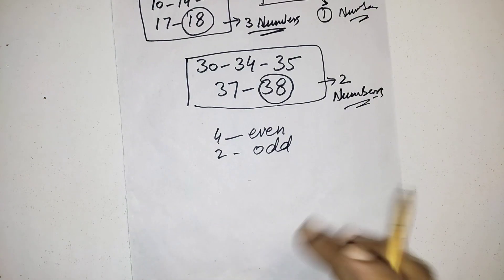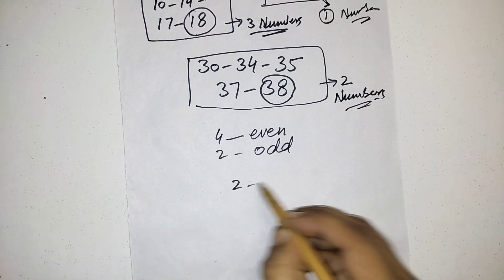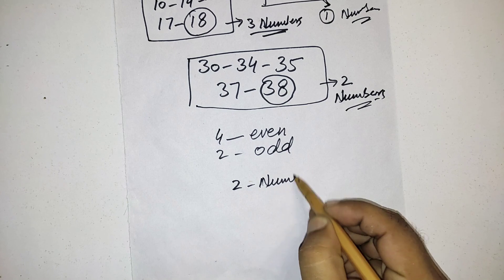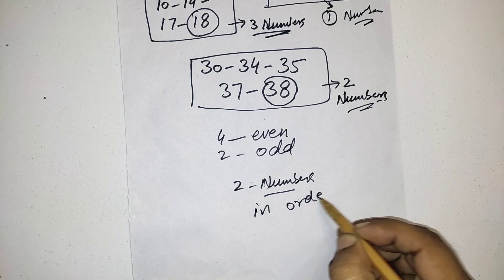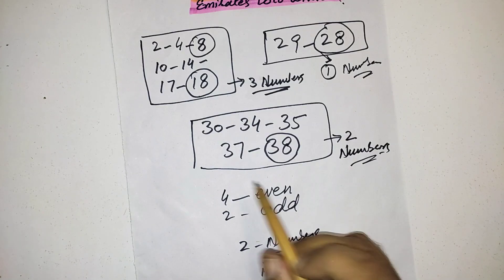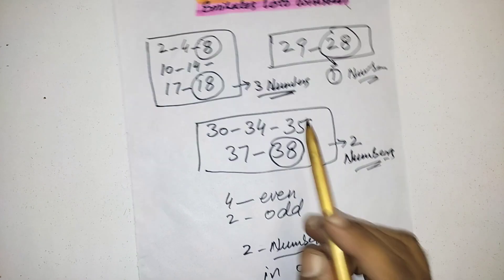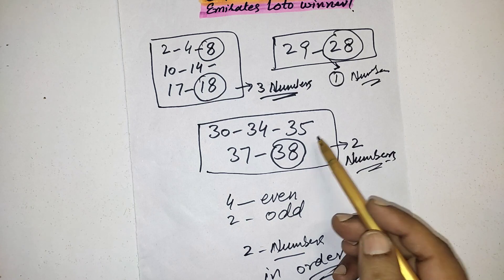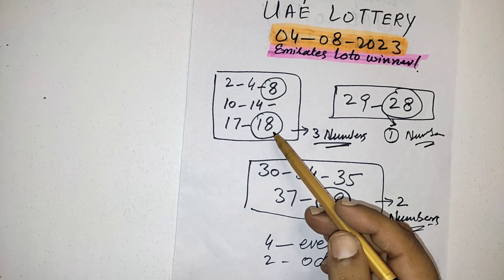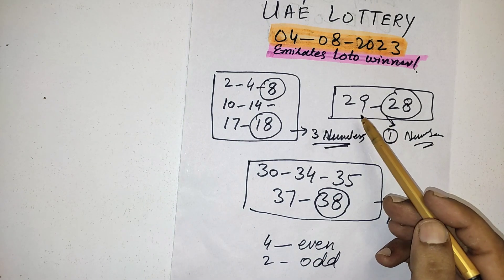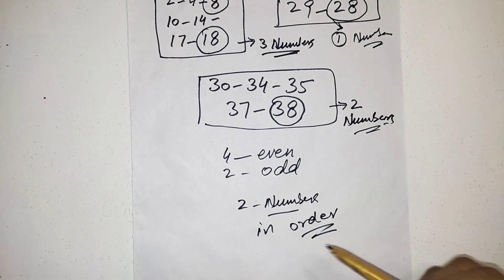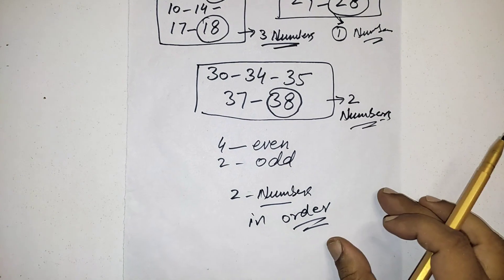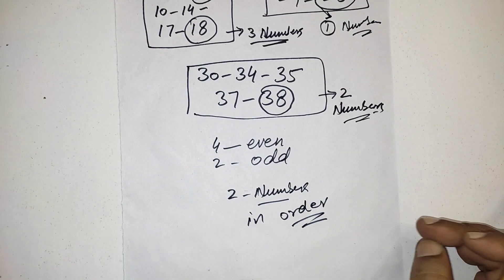For this draw you must select two numbers in order, like you can see 37-38, or 34-35, or 17-18, 28-29, like this you can select. If you like any other number, you must select two numbers in order. Okay guys, this is my prediction for the Easy 6 upcoming draw.